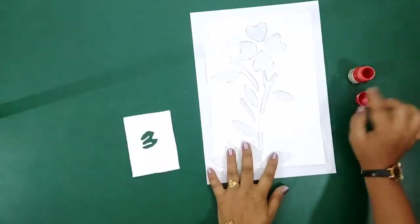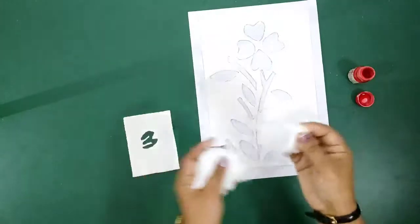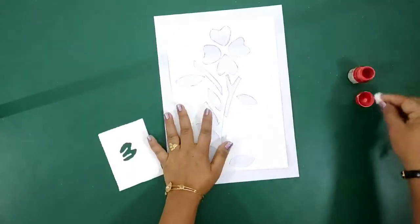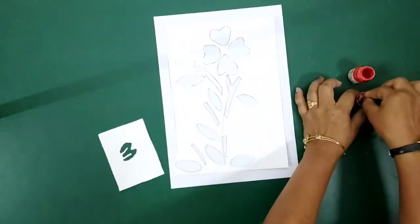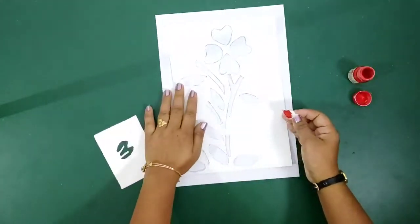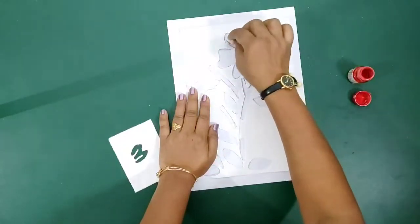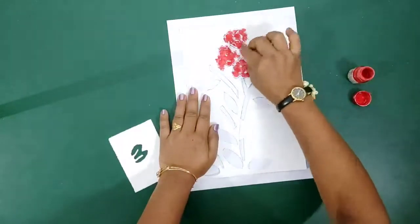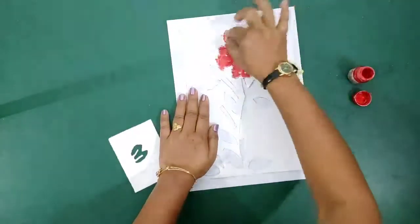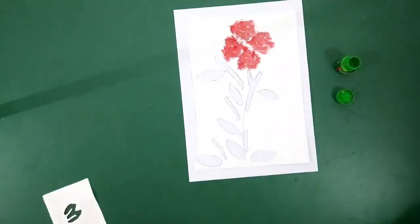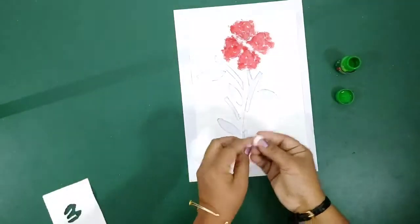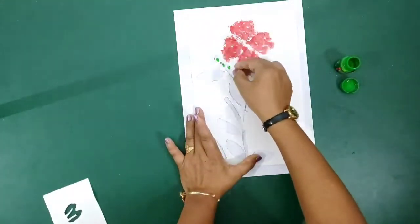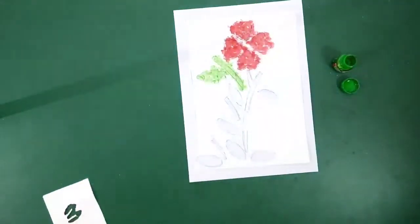Here I am using red color for the flower. Take a piece of cotton and take some red color on it and fill it in the flower. Now take another piece of cotton and take some green color and fill over all the stem and leaves.